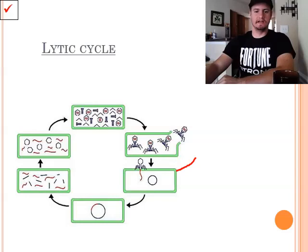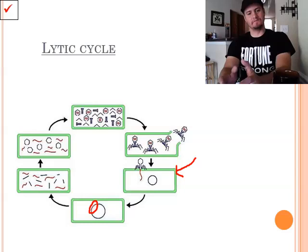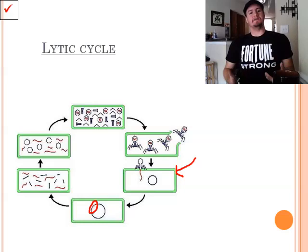So the lytic cycle. What we have here is first off, the virus will land on a host cell. It injects its DNA into the cell, which is right here. It merges with the host cell's DNA and then gradually starts to take over all cellular activity. It says, hey, you know how you were making red blood cells? You don't need to do that anymore. Make more of me. We need more copies of me.